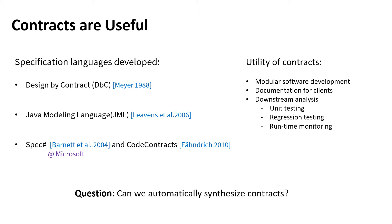First, it supports software development where code satisfying the same contract can be swapped in. Second, contracts enable clients to understand modules. Contracts also enable downstream analysis, including unit testing, oracles for regression testing, and runtime monitoring. In fact, Spec# and CodeContracts were used at Microsoft for testing. But despite their benefits, manually writing these contracts is time-consuming and error-prone, so generating them automatically is an important problem.